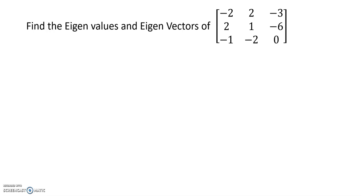The question is: find the eigenvalues and eigenvectors of the matrix with entries minus 2, minus 3, 2; 1, minus 6, minus 1; minus 2, 0.